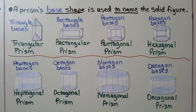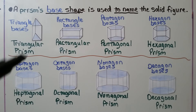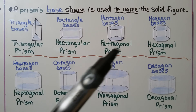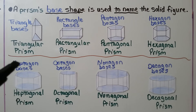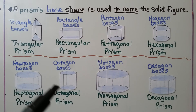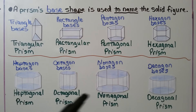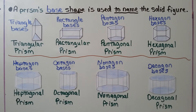A prism's base shape is used to name the solid figure. Triangle bases: triangular prism. Rectangle bases: rectangular prism. Pentagon bases: pentagonal prism. Hexagon bases: hexagonal prism. Heptagon bases — that's seven sides — heptagonal prism. Octagon bases: octagonal prism. Nonagon bases: nonagonal prism. And decagon bases: decagonal prism.